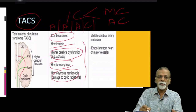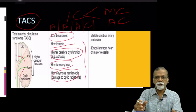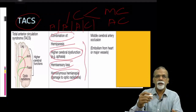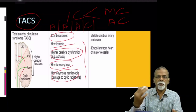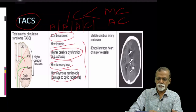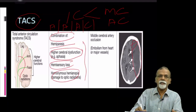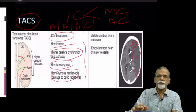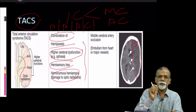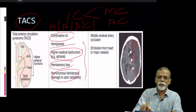Hemisensory loss is common because of involvement of the parietal lobe, and as already mentioned, homonymous hemianopia. If all these are present, you can make a clinical diagnosis of TACS — total anterior circulation stroke. It is usually due to embolism from the heart. Somebody with mitral stenosis develops a large thrombus which embolizes to the internal carotid system and blocks the middle cerebral and anterior cerebral artery. On CT scan you can see both areas supplied by the anterior cerebral artery and middle cerebral artery are involved.